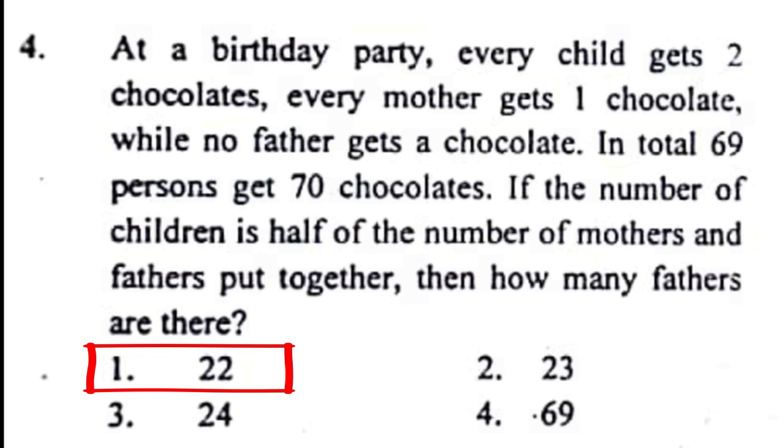Problem number 4: At a birthday party, every child gets 2 chocolates, every mother gets 1 chocolate, while no father gets a chocolate. In total, 69 persons get 70 chocolates. If the number of children is half of the number of mothers and fathers put together, then how many fathers are there? The correct answer to this problem is option 1, that is 22.